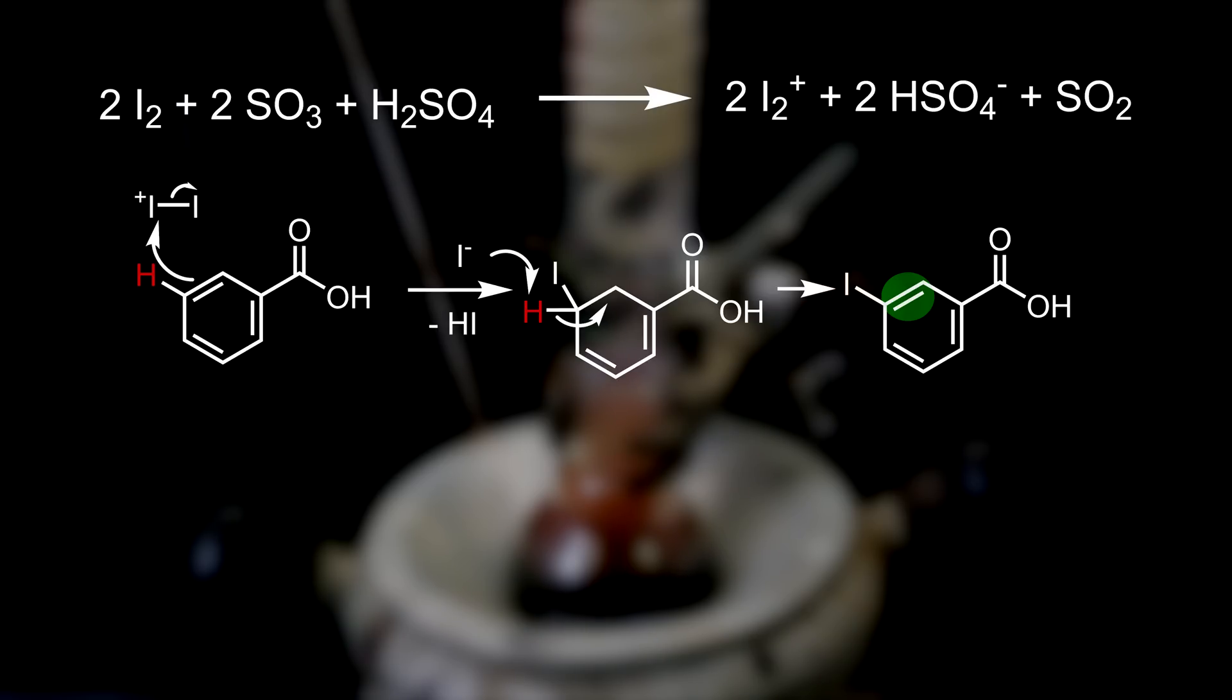Under these high temperatures, this process repeats itself uncontrollably to give fully and partially iodinated benzoic acids and benzenes.